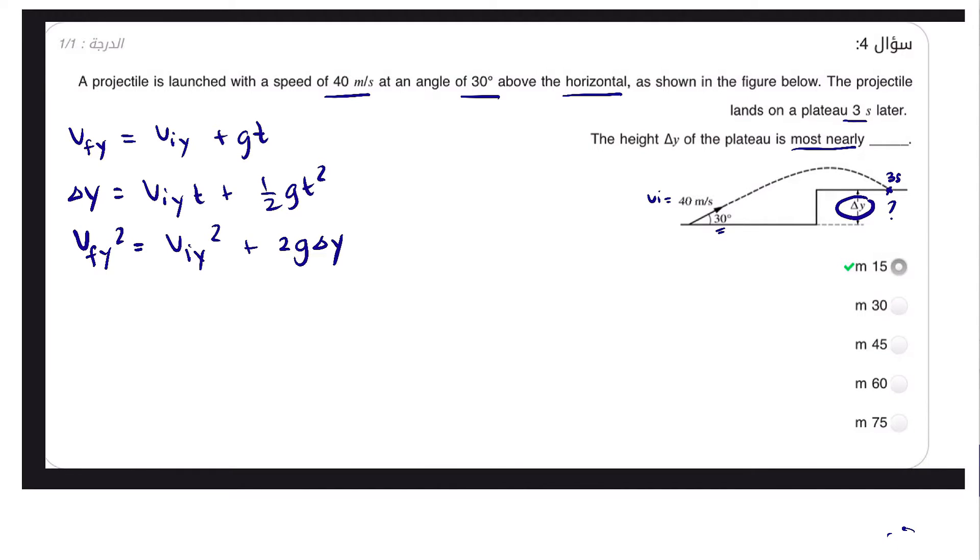We can utilize the second equation to solve this problem because from vi we can obtain viy, and we are also given time. We know acceleration due to gravity, and we need to solve for Δy.